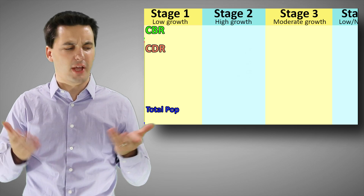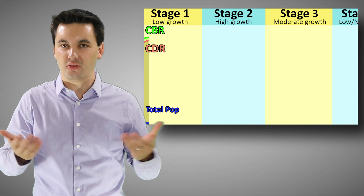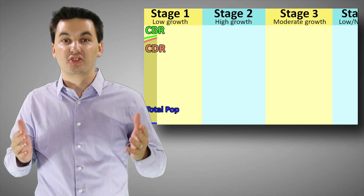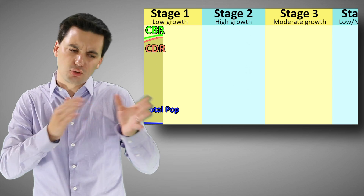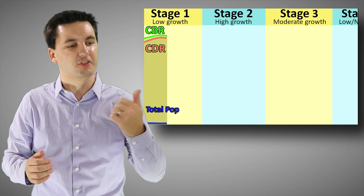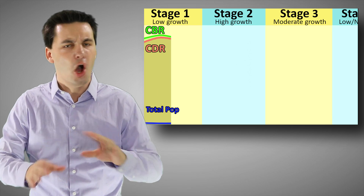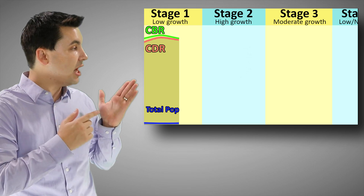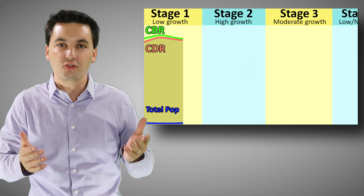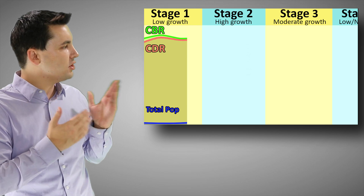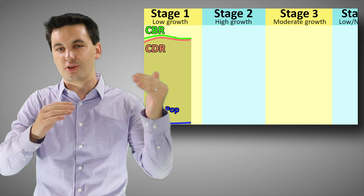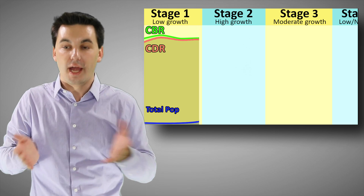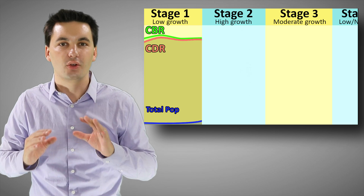The first stage of the model is actually where the majority of human history has happened. It's defined by low growth. We can see that births are really high — remember CDR, CBR, and NIR from our last video. Births are high and deaths are also high. They're essentially the same, so our growth rate is actually pretty low — it's being canceled out.